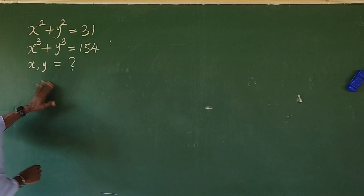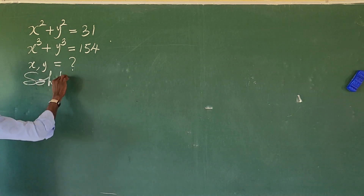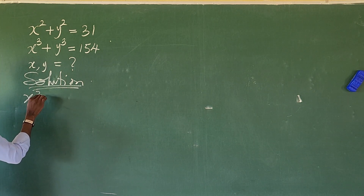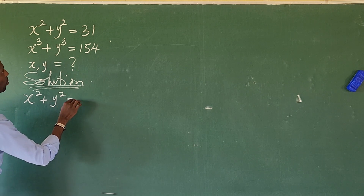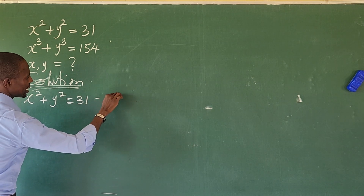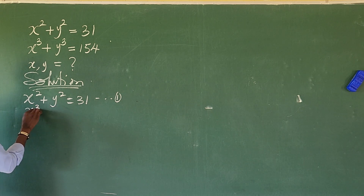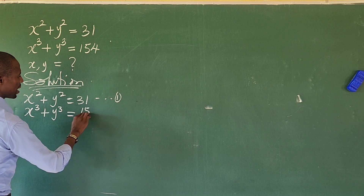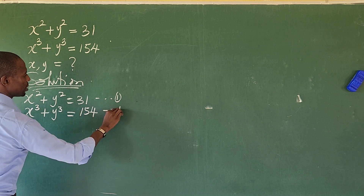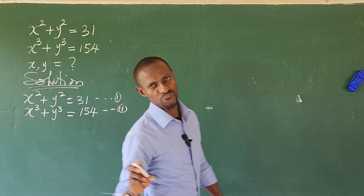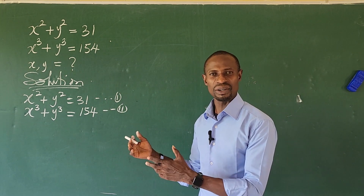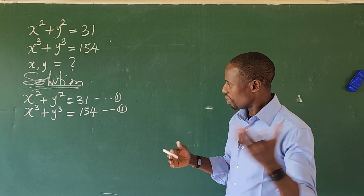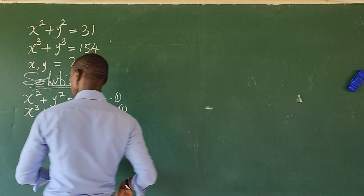Let's take our first equation, which is X² plus Y² equals 31. We'll label this equation 1. And X³ plus Y³ equals 154 will be equation 2. We label them because we're going to encounter a series of different equations from here, and we'll make references to either of these.